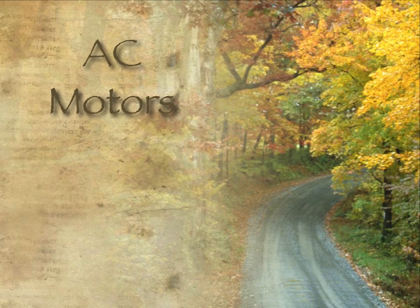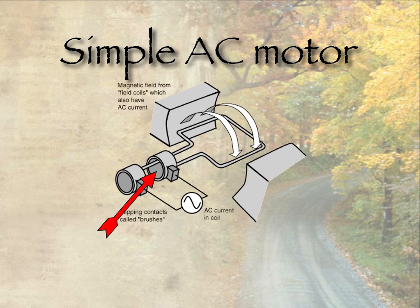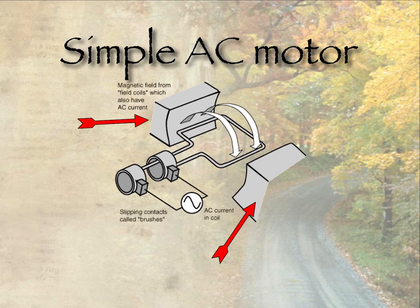Welcome to High School Physics Explained. Today I want to talk about AC motors or alternating current motors. Here we have a magnet and a slip ring commutator, which ensures we have a constant connection to an alternating power supply. That causes this ring to turn because of the motor effect — the current going across this direction will cause it to turn depending on the polarity of the magnets.